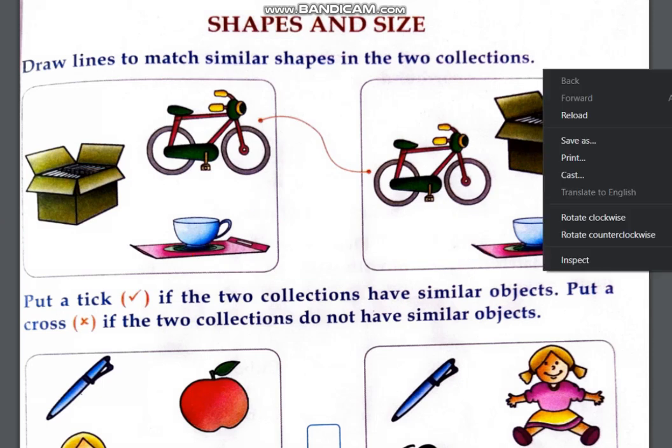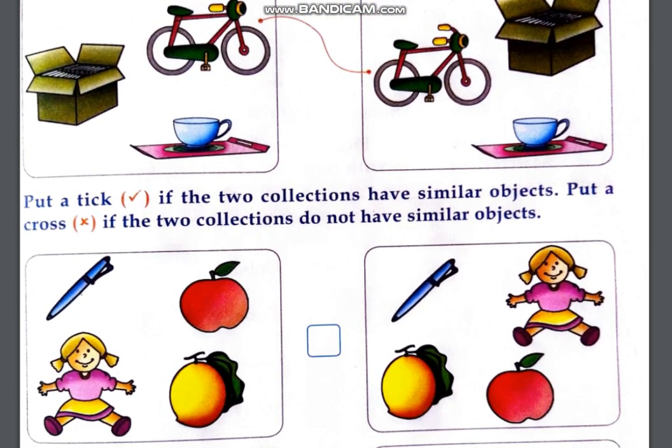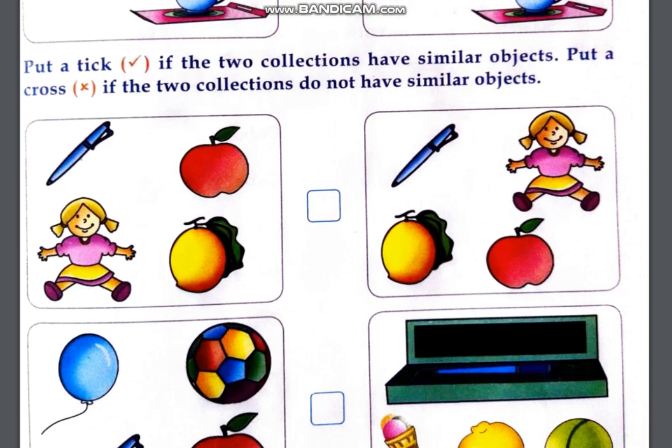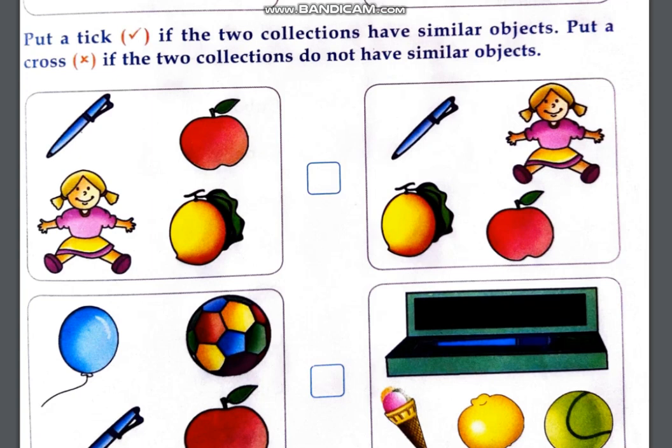Put a tick if the two collections have similar objects. Put a cross if two collections do not have similar objects. You have to tick if there are similar objects. You have to cross if there are no similar objects. In the second collection, you have to check that all the things are same or not. Here in the other collection, on this side in the other collection.